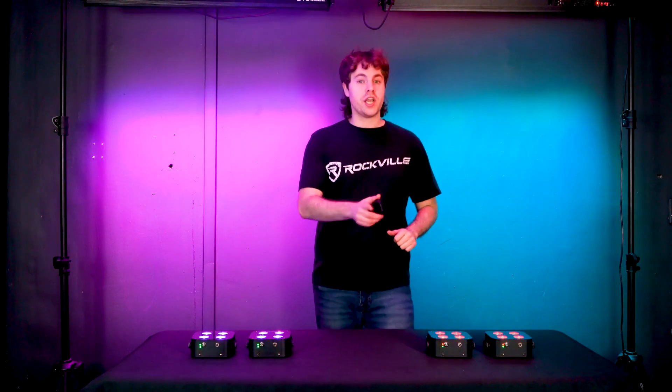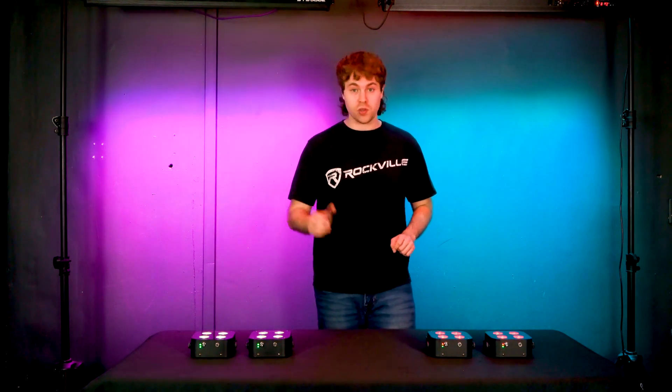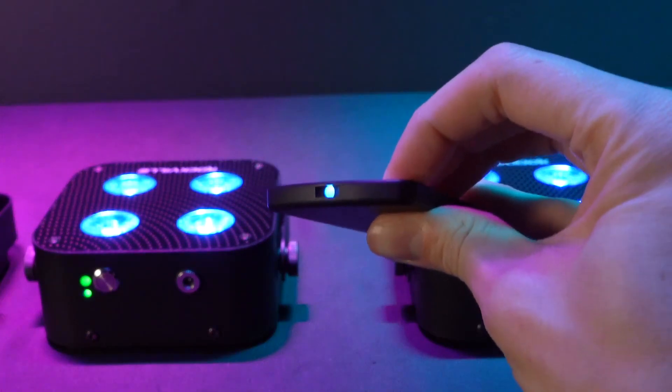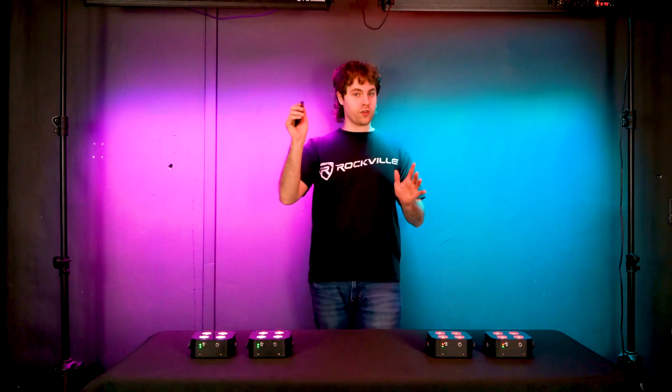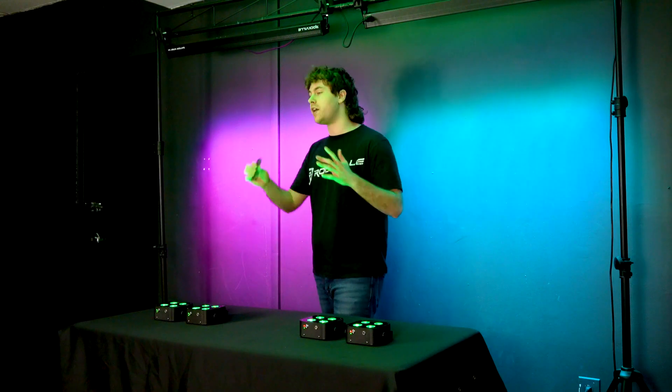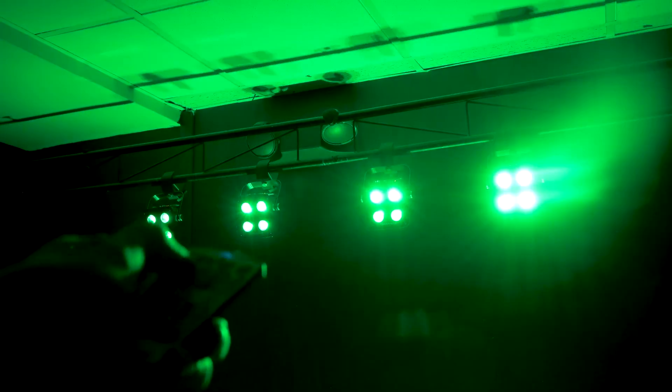Now what's also really cool is that we can change all of our lights at the same time, no matter which color group they're set to. To do that, I'm going to press the RF group button here until the light on the front flashes white. And now if I use the remote to set the lights to a different color, you'll see that they all follow, no matter which color group they're set to. This is really handy if you quickly wanted to change all of your lights at once.